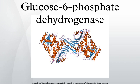Of greater quantitative importance is the production of NADPH for tissues actively engaged in biosynthesis of fatty acids and eicosanoids, such as the liver, mammary glands, adipose tissue, and the adrenal glands. G6-PD reduces NADP+ to NADPH while oxidizing glucose-6-phosphate. It is notable in humans that a genetic deficiency of G6-PD predisposes individuals to non-immune hemolytic anemia.